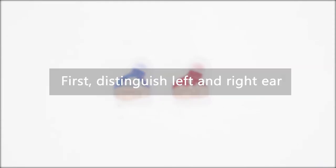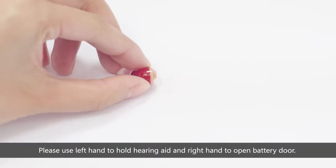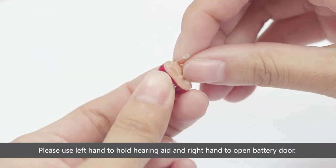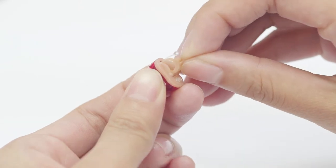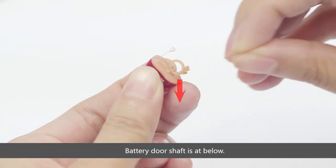Battery Door Replacement. First, distinguish left and right ear. Use your left hand to hold the hearing aid and right hand to open the battery door. The battery door shaft is at the bottom.